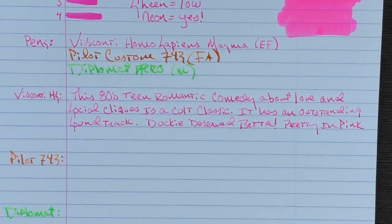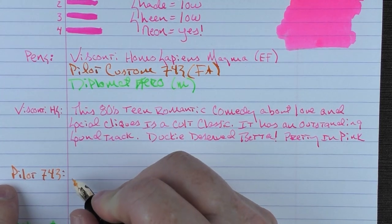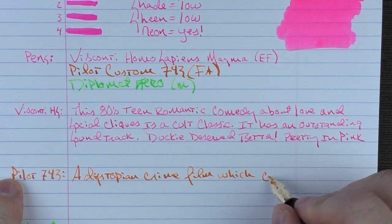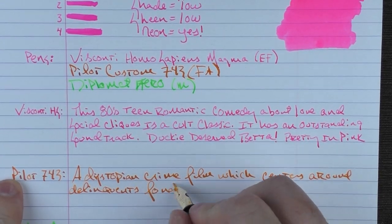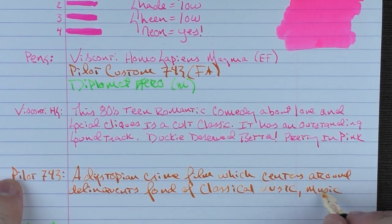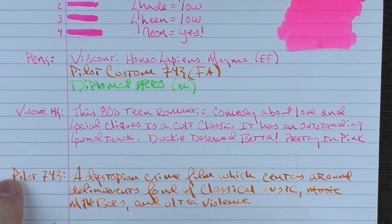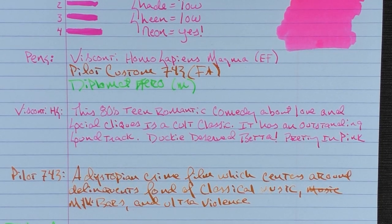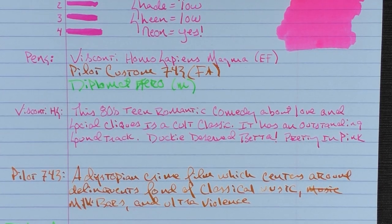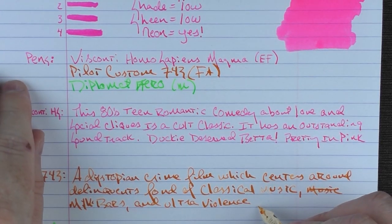Okay, next up we have the Pilot 743. So for the orange movie, I said a dystopian crime film which centers around delinquents fond of classical music, milk bars, and ultra violence. And that movie is of course A Clockwork Orange.